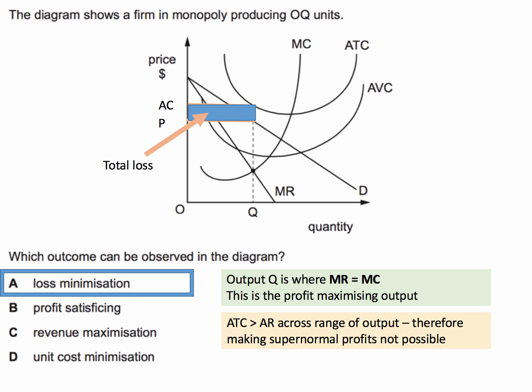But instead of profit maximising, this is also the condition — MC equals MR — which is also the condition for loss minimisation. So the answer is A.